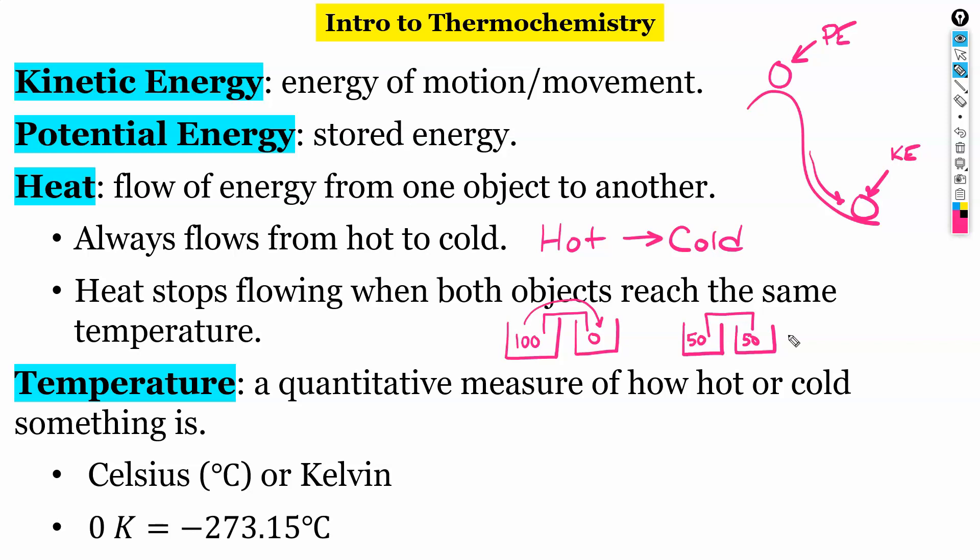So heat and temperature are often confused. Temperature is a quantitative measure, remember quantitative has to do with numbers, measure of how hot or cold something is. Most of the time we're going to be using the Celsius scale. Another scale that you might see used in thermochemistry is called the Kelvin scale. With Celsius, zero degrees Celsius is where water freezes. Zero Kelvin is absolute zero. So absolute zero is where things just completely stop moving, that's the coldest theoretical temperature.